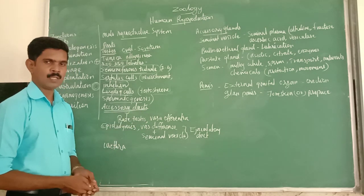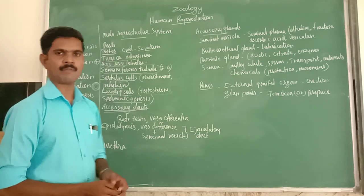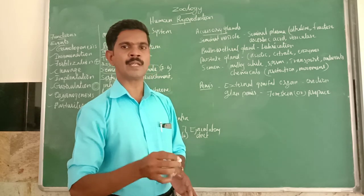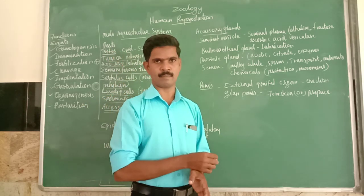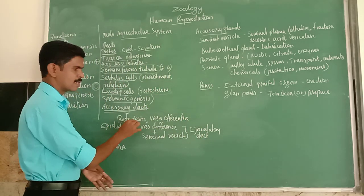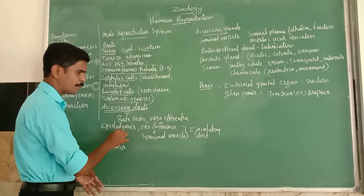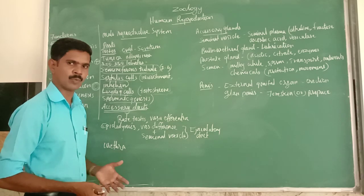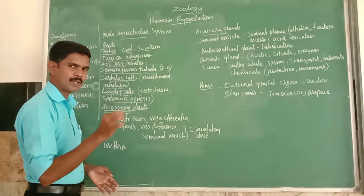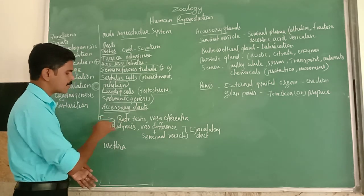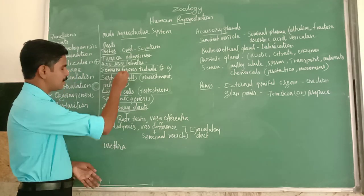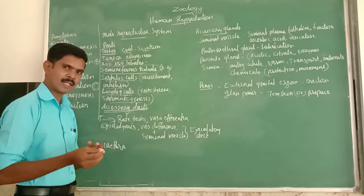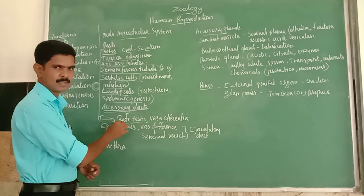The next part is the accessory duct. The male reproductive system consists of many ducts through which the sperm moves from the testis to outside. The ducts include the rete testis, vasa efferentia, epididymis, vas deferens, and seminal vesicles. The sperm is produced inside the seminiferous tubule and then moves to the rete testis.